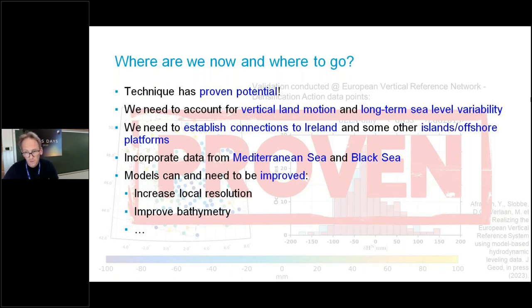So where are we now and where to go? For me, the technique has proven potential. There are still many things to do: we need to account for vertical land motion, we need to account for long-term sea level variability at the tide gauges, we need to establish connections to Ireland and other islands and offshore platforms. We also would like to readjust this height system by including data in the Mediterranean and Black Sea. Ideally, we would be able to combine these basins. There's quite a number of steps we can make to further improve the models. You have to be aware that these models are developed for storm surge prediction, which is a completely different application from what we consider here.